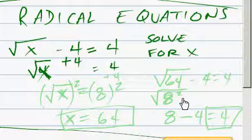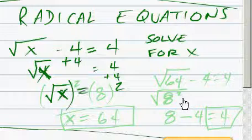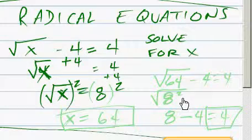We're going to add 4 to this side. We're going to add 4 to this side, which gives us square root of x equals 8.